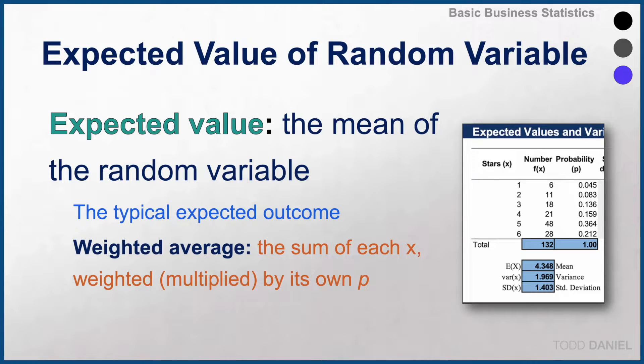The expected value is essentially a weighted average. We take the sum of each X value and then weight it or multiply it by its own probability.